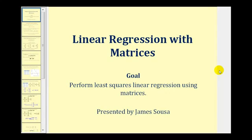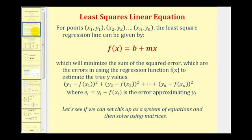Welcome to a lesson on performing least squares linear regression using matrices. If we're given points as labeled here, the least squares regression line can be given by f of x equals b plus mx, where b would be the y-intercept and m would be the slope of the line, and this will minimize the sum of the squared errors.